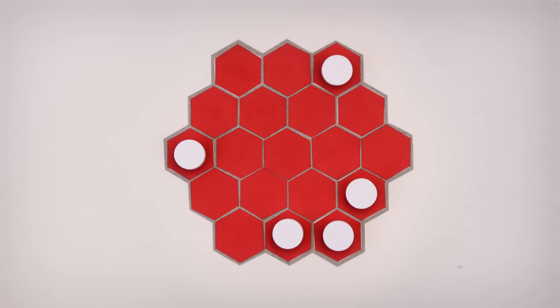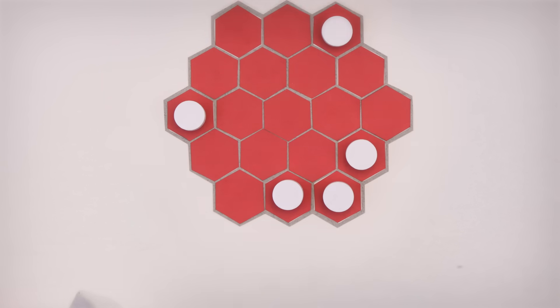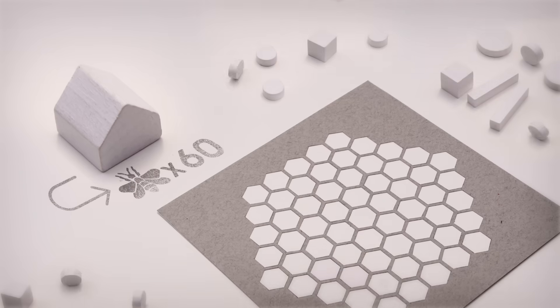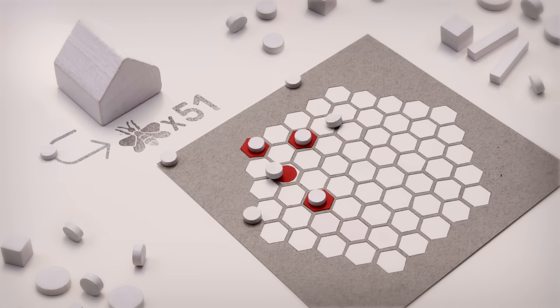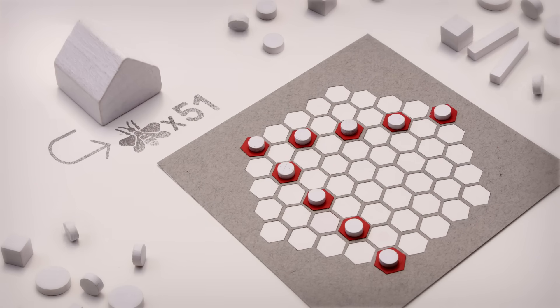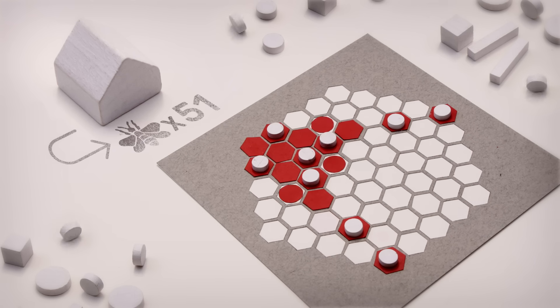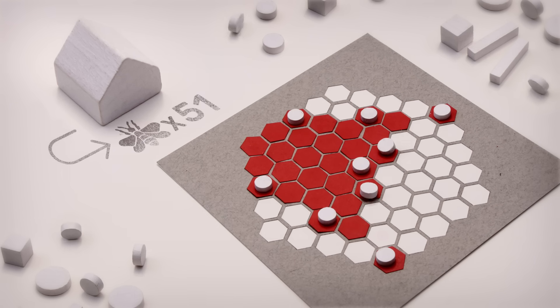It looks like we have the beginning of a pattern. Can we extend it to our full hive? That would mean placing our nine bees like so. Once they get to work, they'll create a chain reaction that fills in the center of the hive and extend it to its edges.